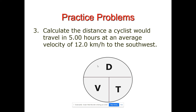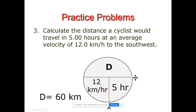Work out number three. This time we're not finding velocity — we're calculating the distance a cyclist would travel in five hours at an average velocity of 12 kilometers per hour southwest. Plug in 12 as velocity and 5 hours as time. Since we're finding distance, we multiply: 12 times 5 equals 60 kilometers. Hours cancel, leaving kilometers as the unit. Be careful to use the correct unit. That was our velocity lesson — see you in the next one!